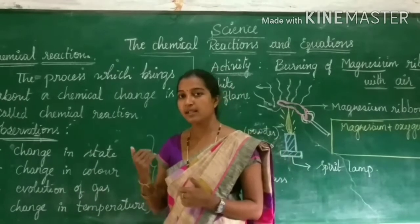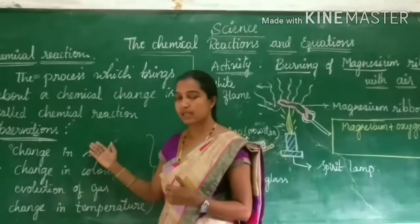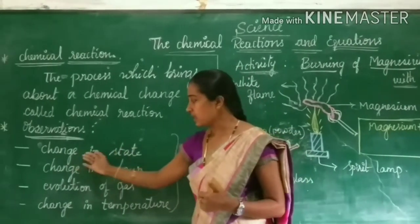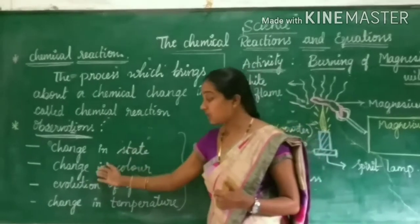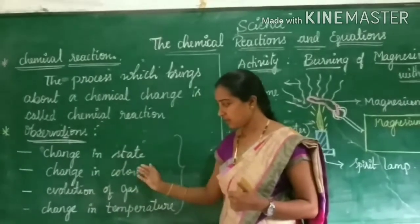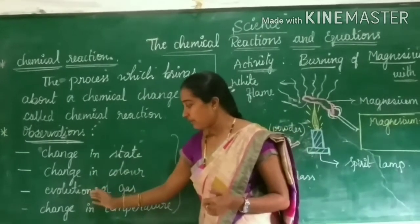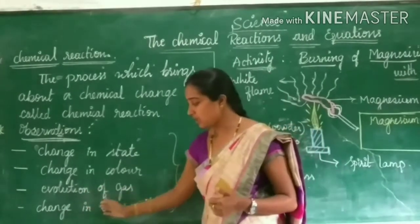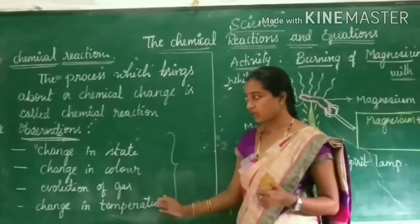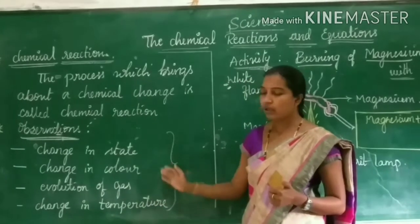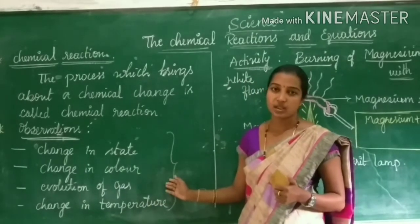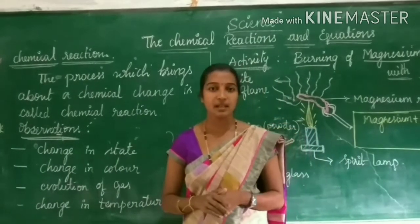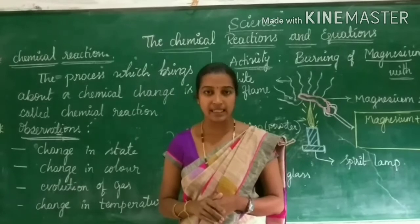Let's see which are those observations: change in state, change in color, evolution of gas, and change in temperature. These are the observations used to determine a chemical reaction.